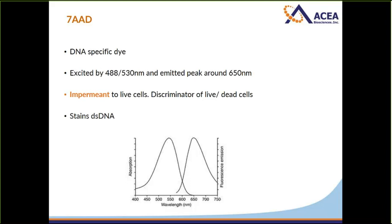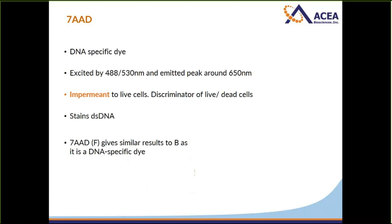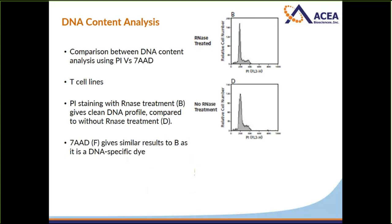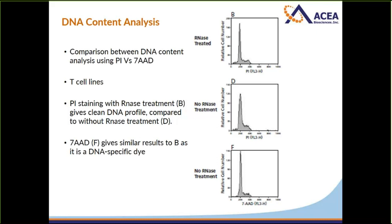What are the differences between PI and 7AAD in practice? Using a T-cell line, cells that were fixed, permeabilized, RNase-treated, and then stained with PI show a very clean DNA profile. In contrast, T-cells that were not treated with RNase show many more events, because PI stains both RNA and DNA — meaning without RNase treatment you overestimate events in all phases. Cells treated with 7AAD alone give a histogram similar to the RNase-treated PI sample, since 7AAD is DNA-specific and requires no RNA treatment.